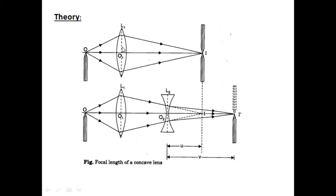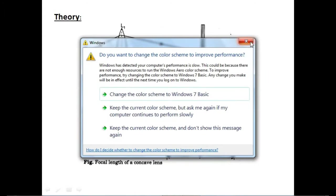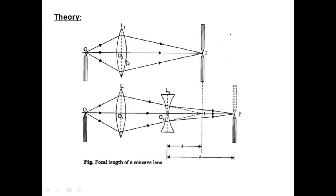Consider a convex lens L1, where O1 is the optic centre of the lens. The line passing through the optic centre is the principal axis. An object needle is placed on the left side of the convex lens and its real and inverted image I is located by the image needle.